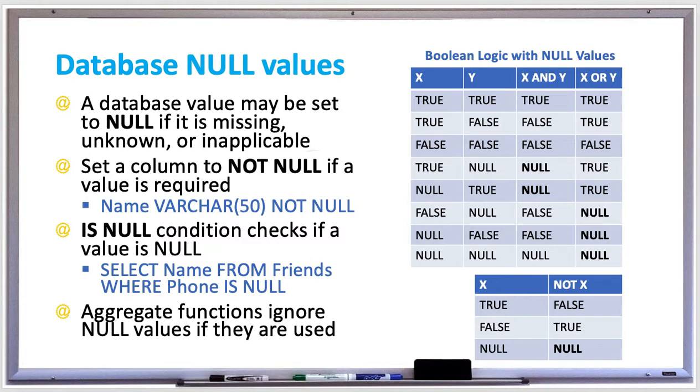Boolean variables are represented as zero in the database for false or one in the database if they're true. If you take a look at the table on the right, we'll see the Boolean logic with null values.